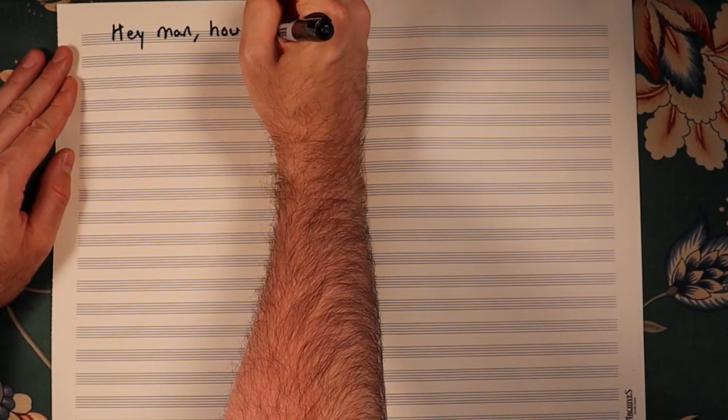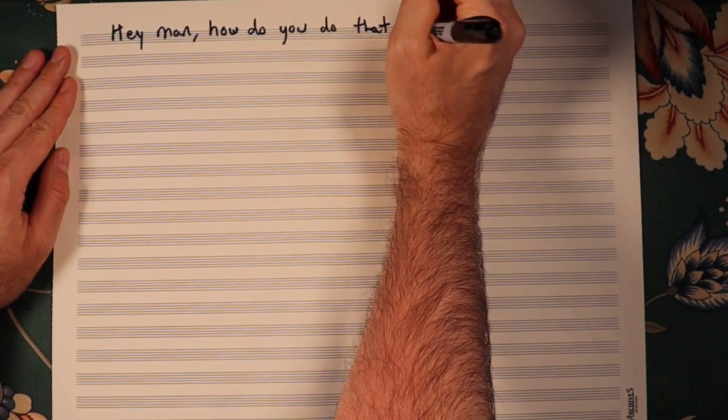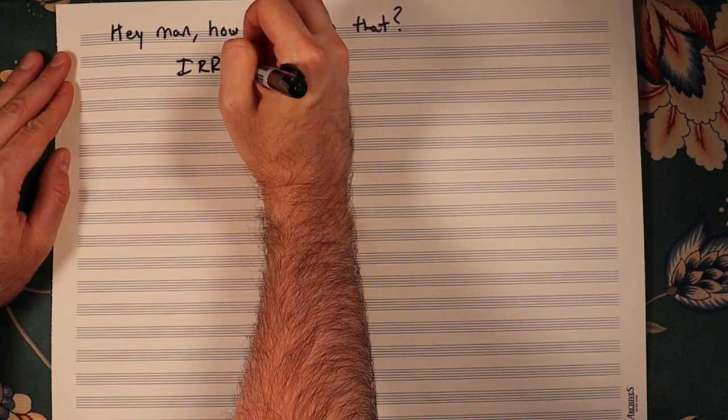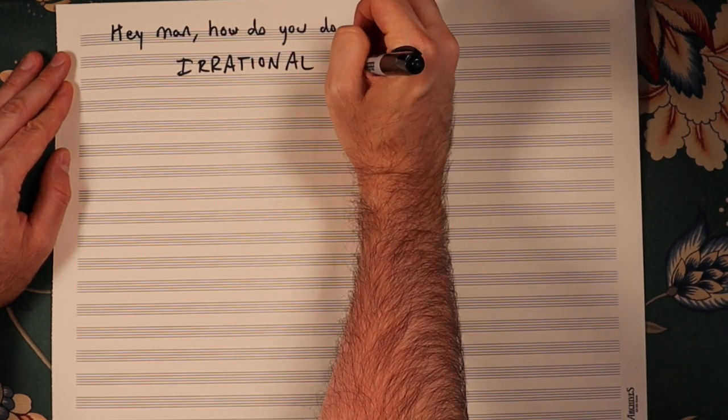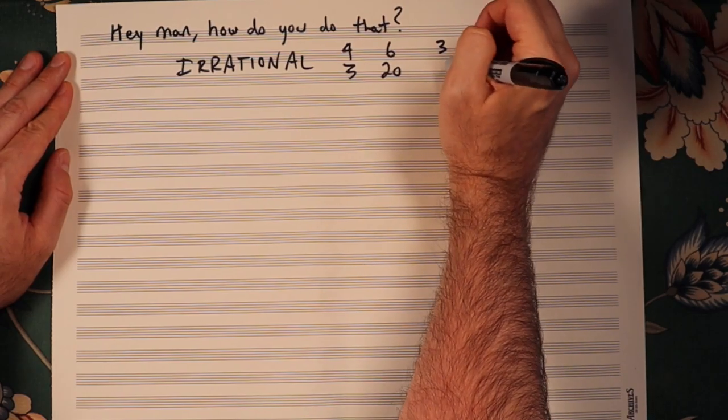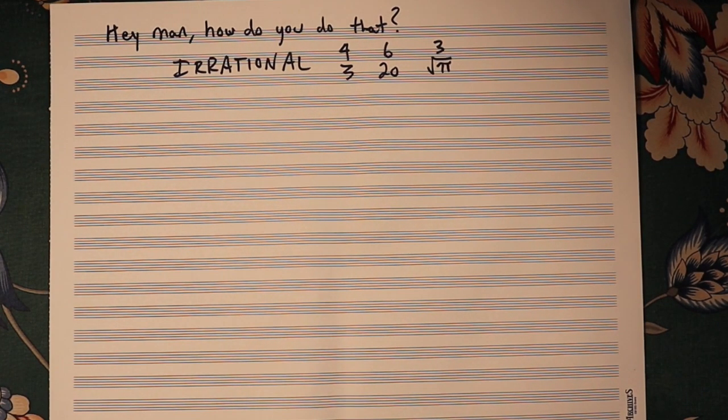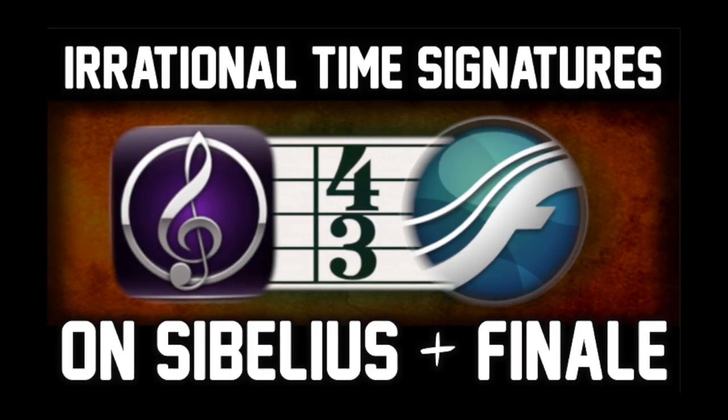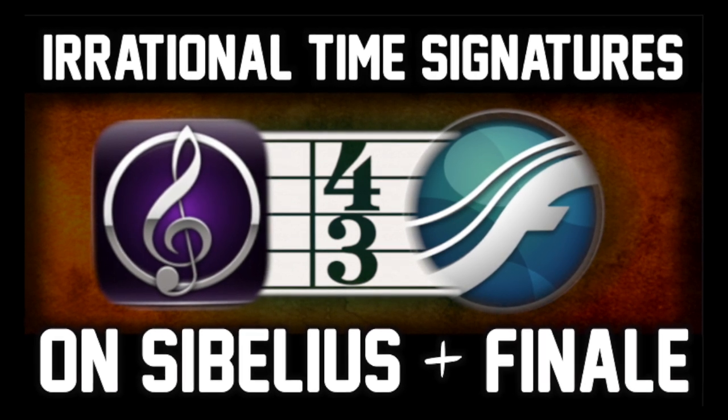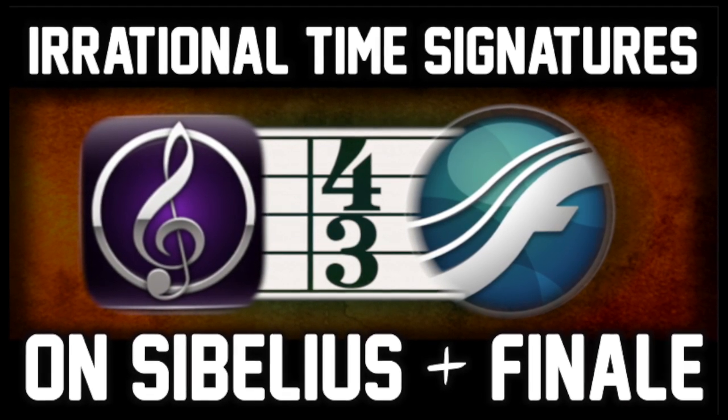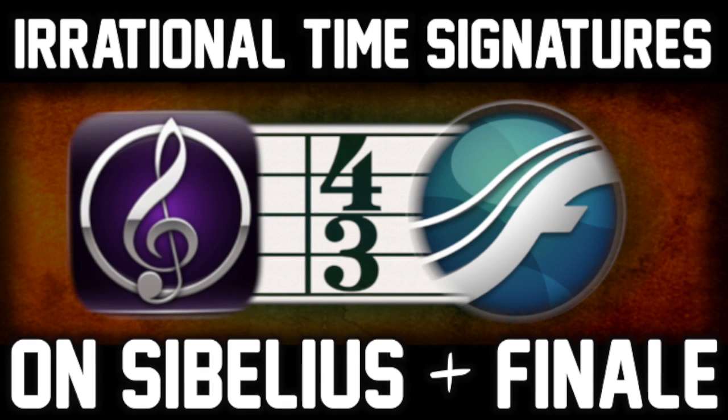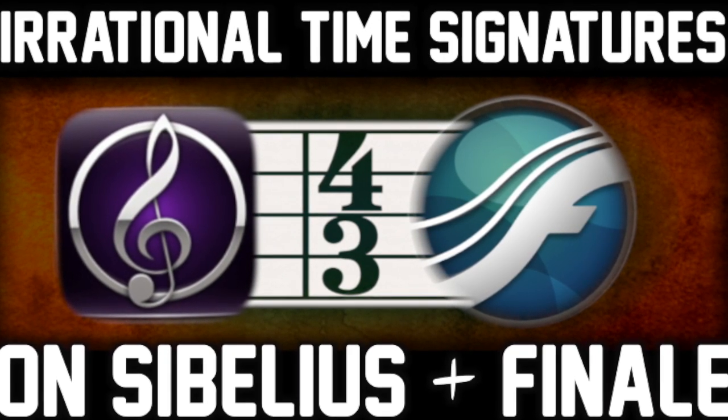On today's episode of Hey Man How Do You Do That, we're talking about irrational time signatures once more. This is because I got a tremendous amount of questions after posting the last video, and they all circled around the same basic gist: how would you do this, but even crazier? If you haven't seen my last video on how to create irrational time signatures in Sibelius and Finale, now would be a good time to do that, because I'm going to assume that you know the basics.